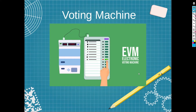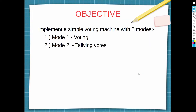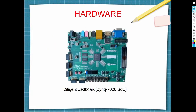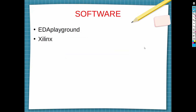Welcome to the channel. Today we will be implementing a simple voting machine using Verilog. This voting machine is going to have two modes: the first is a voting mode in which votes will be cast for different candidates, and the second is the tallying mode in which votes accumulated by every candidate can be displayed. This program was written primarily for the Z-Board, in particular the Zynq 7000 SoC. However, at the time of recording I don't have the board, so we will settle for a software demonstration instead. This program was primarily written using EDA Playground, a web-based IDE, along with some RTL images from Xilinx.